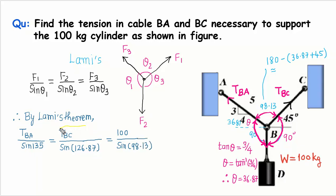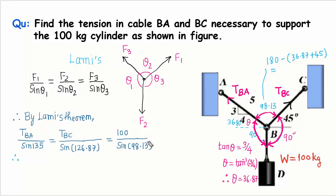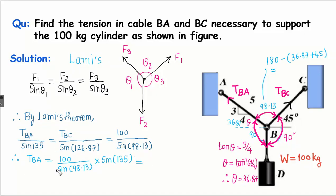If you take this particular pair, only TBC is unknown, so I can find out the value of TBC. Similarly, the unknown in the other part is only tension BA. So by using the weight term and the tension BA term: tension in cable BA will be equal to 100 divided by sine 98.13, multiplied by sine 135. If you solve this equation, the tension in cable BA will be 71.56 kg. You can convert these values into Newtons by multiplying by 9.81, but since the values are given in kg I am continuing in kg.